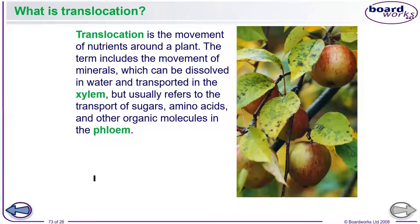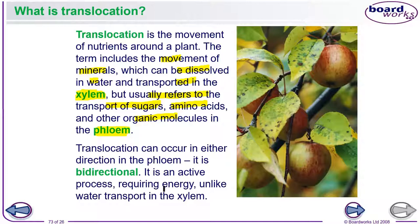Translocation is the movement of nutrients around the plant. The term includes the movement of minerals dissolved in water transported in xylem, but usually refers to the transport of sugars, amino acids, and other organic molecules in the phloem. It can occur in either direction in the phloem, so it is bi-directional. In xylem, movement was uni-directional. Wherever the nutrient is required, it will move — if it's needed in roots, it will go down.